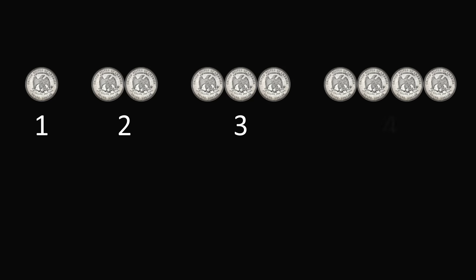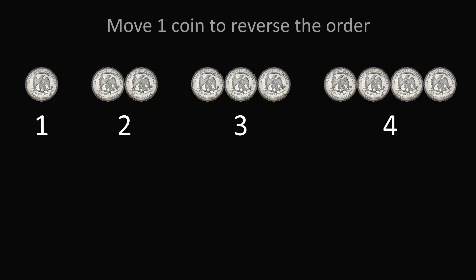Puzzle 2. We have one coin, then two coins, then three coins, and four coins — so we have one, two, three, and four coins in a row. Here's the challenge.